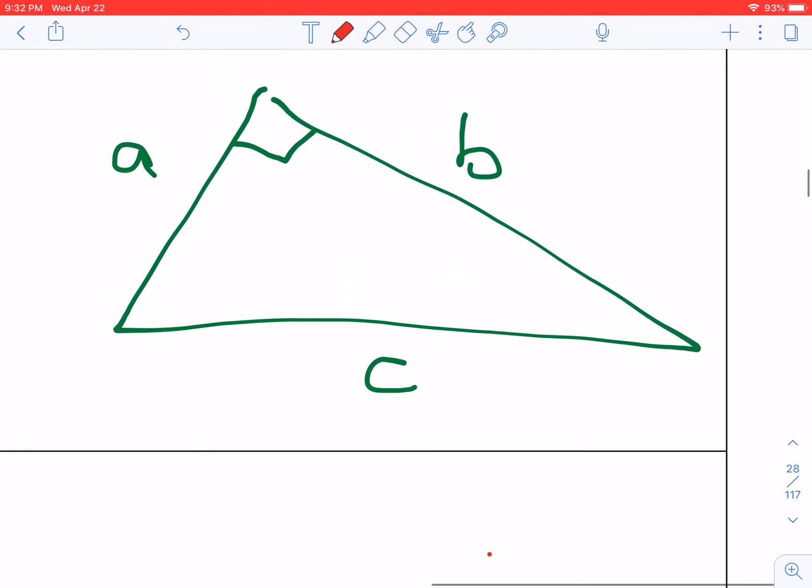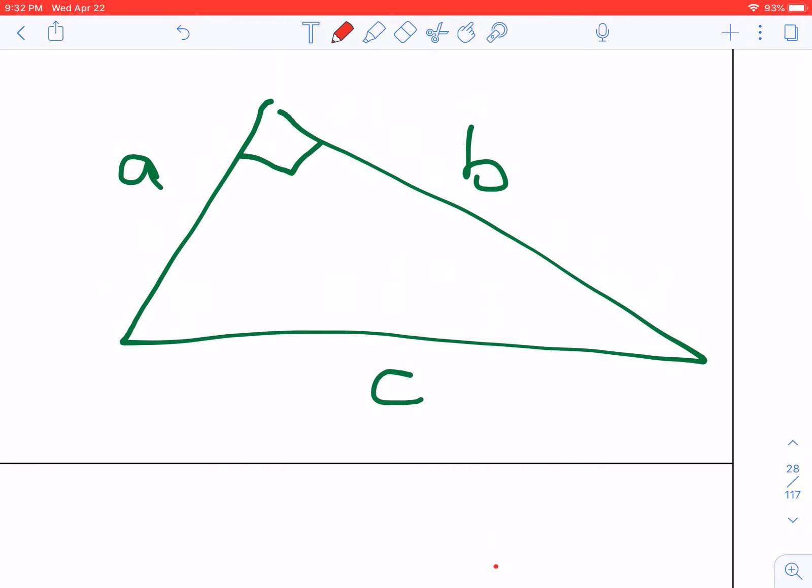All right, so here's our right triangle. I'm going to draw an auxiliary line. We call that the altitude to the hypotenuse. Yes, from the last section.